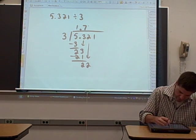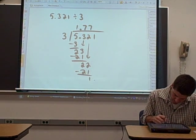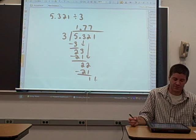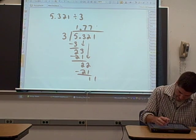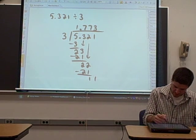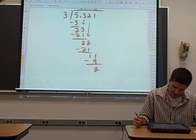Let's see. We brought down 22. We get another 7. How many times does 3 go into 11? 3 times. 3 times 3 is 9. And we're going to get a remainder in this case of 2.